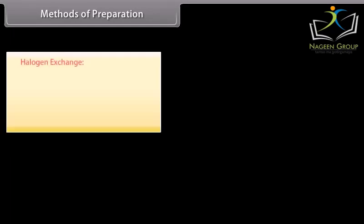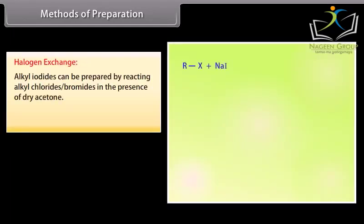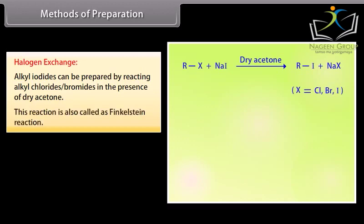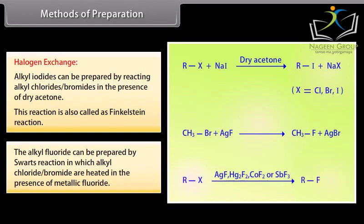Methods of Preparation — Halogen Exchange. Alkyl iodides can be prepared by reacting alkyl chlorides or bromides in the presence of dry acetone. This reaction is also called the Finkelstein reaction. Alkyl fluorides can be prepared by the Swartz reaction, in which alkyl chlorides or bromides are heated in the presence of a metallic fluoride.